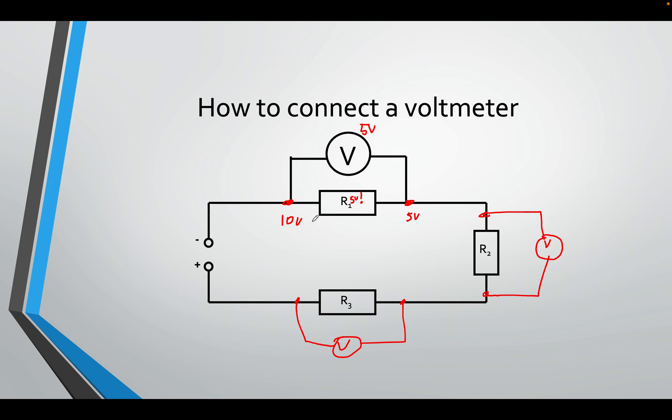A voltmeter, similar idea. You want to measure the energy, but we need to know the difference of energy. So it must be in parallel. We don't want electrons to flow through here. So we must have a high resistance for this, so that electrons will not flow through here.